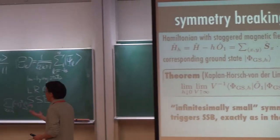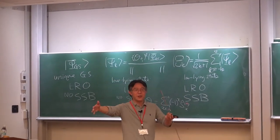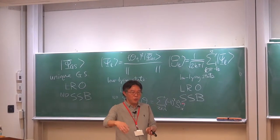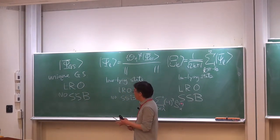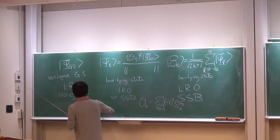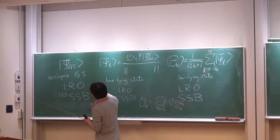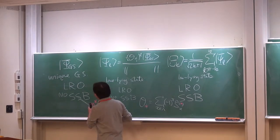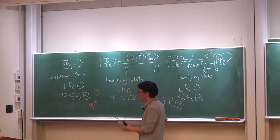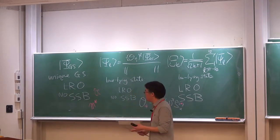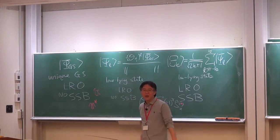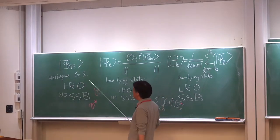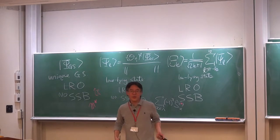M star is defined so as to pick up the maximum possible value that this order parameter takes. So when I define M star, I look at the ground state and look at how O1 behaves, and we pick up the maximum possible value. That is M star. So we believe that this is the order parameter that this system prefers.